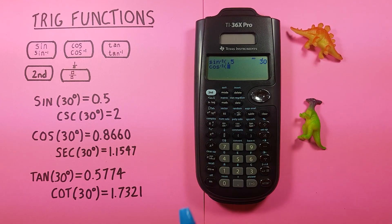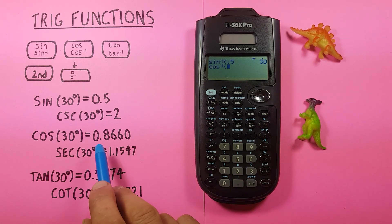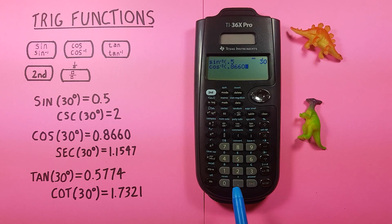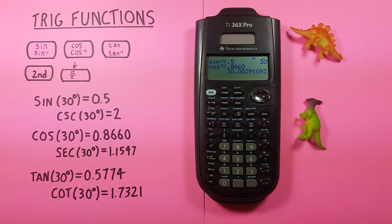For arccos, again press the cosine button twice, and then enter what we got, which was rounded. We'll say 0.8660, enter, and we get what would round to 30 degrees.